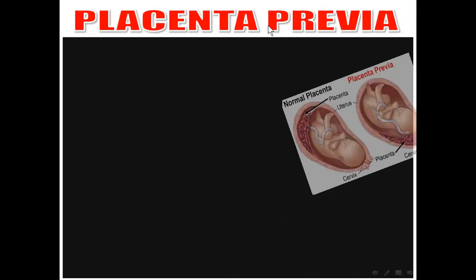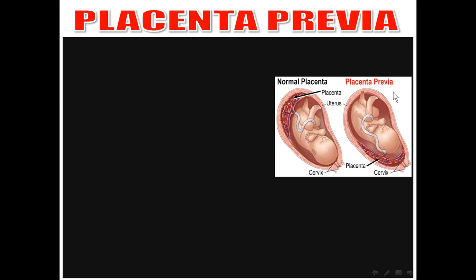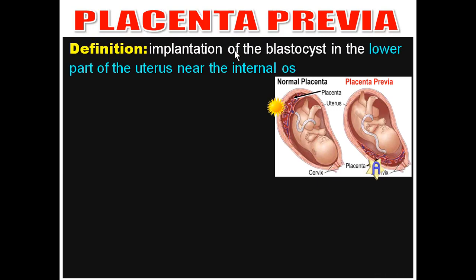Now, placenta previa. What is placenta previa? This is the normal site of the placenta, and this is placenta previa — implantation in the lower part of the uterus, near the internal os. This is the internal os. Placenta previa is implantation of the blastocyst in the lower part of the uterus, near the internal os.